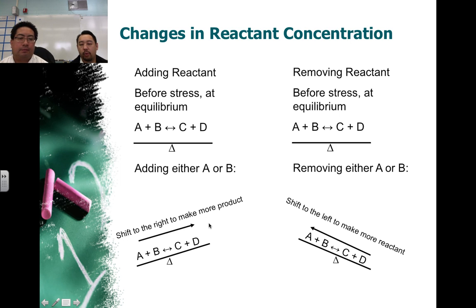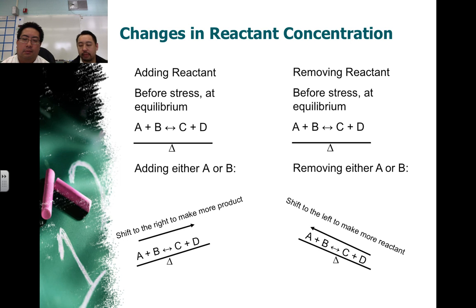A way to look at it is whatever side goes up is the direction that the equilibrium will shift. So, as you can see on the right-hand side with removing a reactant — removing either A or B — we remove something on the reactant side. As a result, the reactant side elevates, and so we will see an increase in reaction rate towards our reactant side, a shift in order to try and rebalance itself.